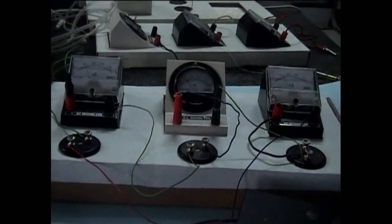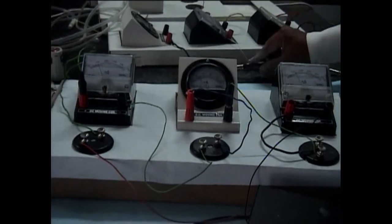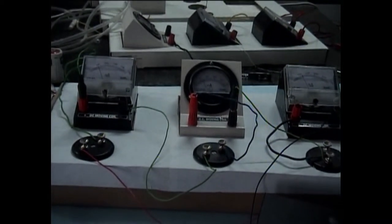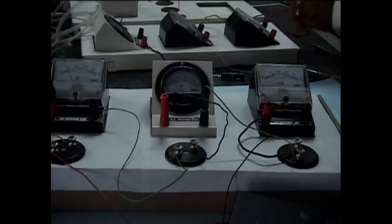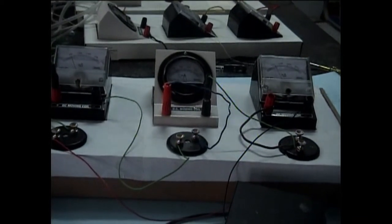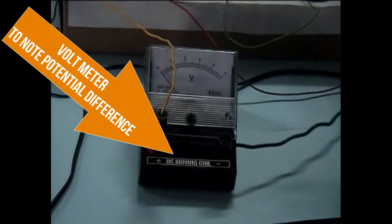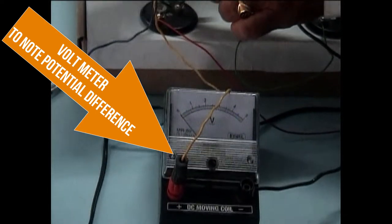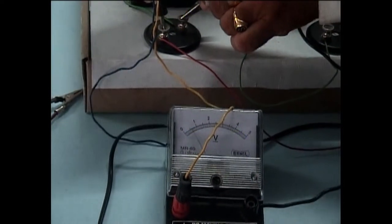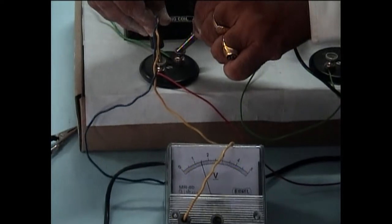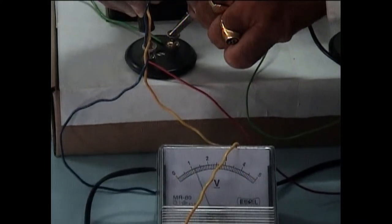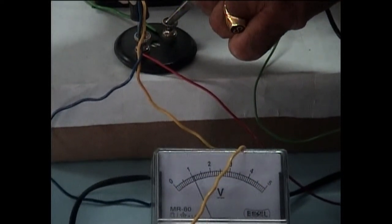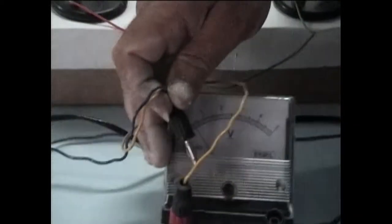The second part of the experiment is to see the potential difference across each resistor. For that, I have taken one voltmeter and I have connected it across parallel to the first resistor, and it is observed as 1.5 volts.